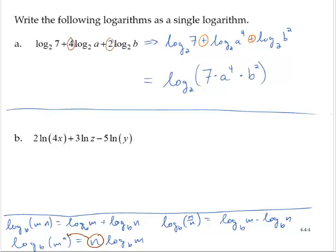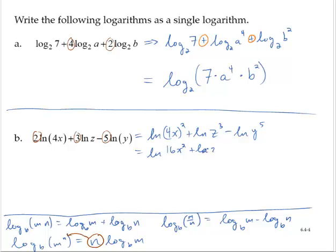In exercise b, using a similar idea, I have several coefficients that I will rewrite using exponents. So I have the natural log of 4x to the second plus the natural log of z to the third minus the natural log of y to the fifth. Now 4x squared can be simplified, so I have the natural log of 16x squared plus the natural log of z to the third minus the natural log of y to the fifth.